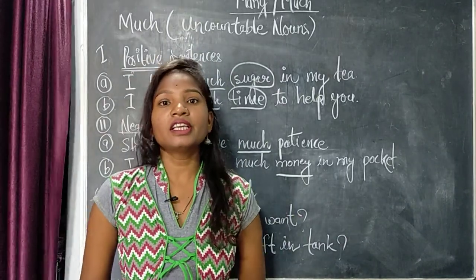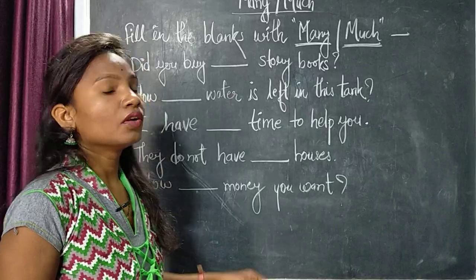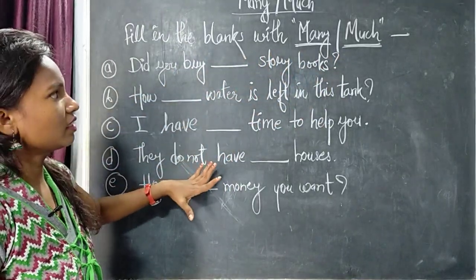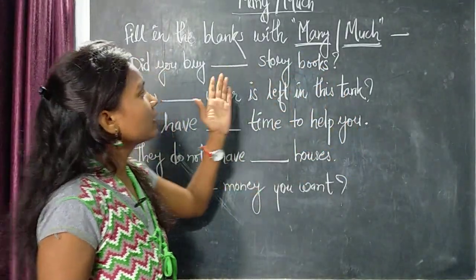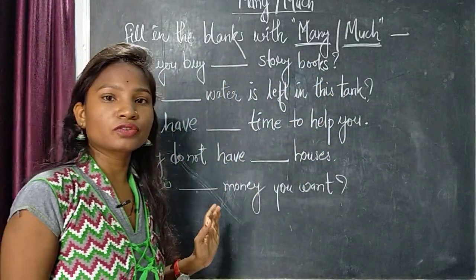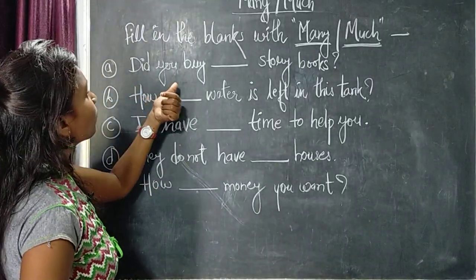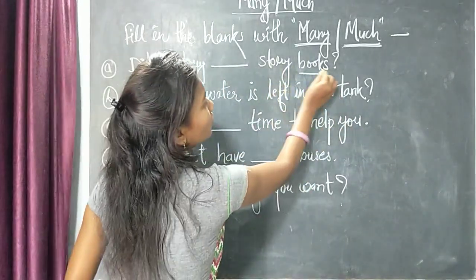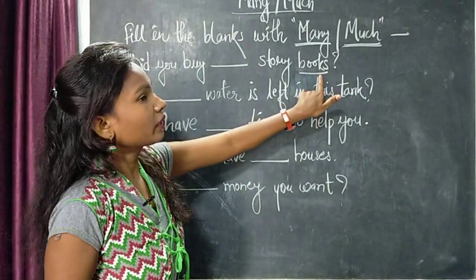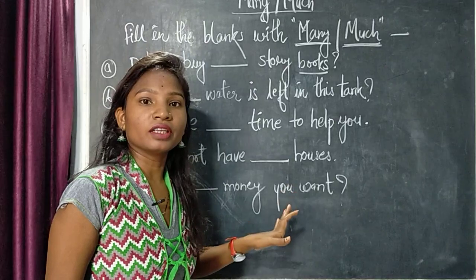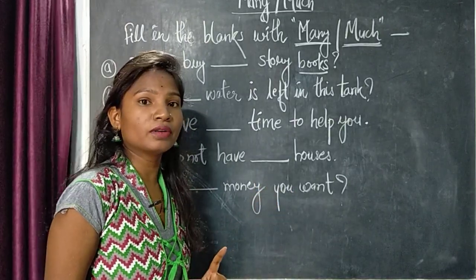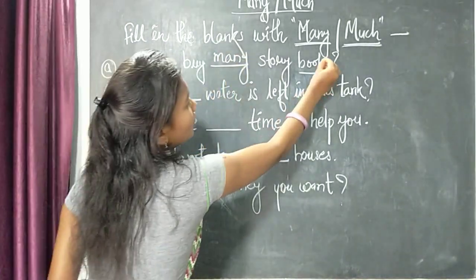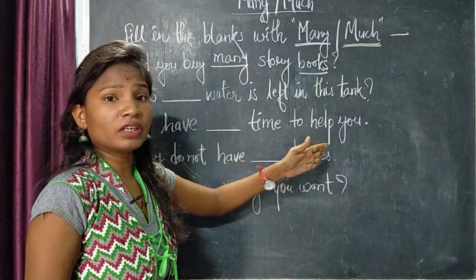To understand better, we will do some exercises. Exercise: fill in the blanks with many or much. First sentence: 'Did you buy ___ story books?' Story books has S or ES written with books — that means it is a plural countable noun. And with plural countable nouns, what do we use? Many. So here we fill in: many.